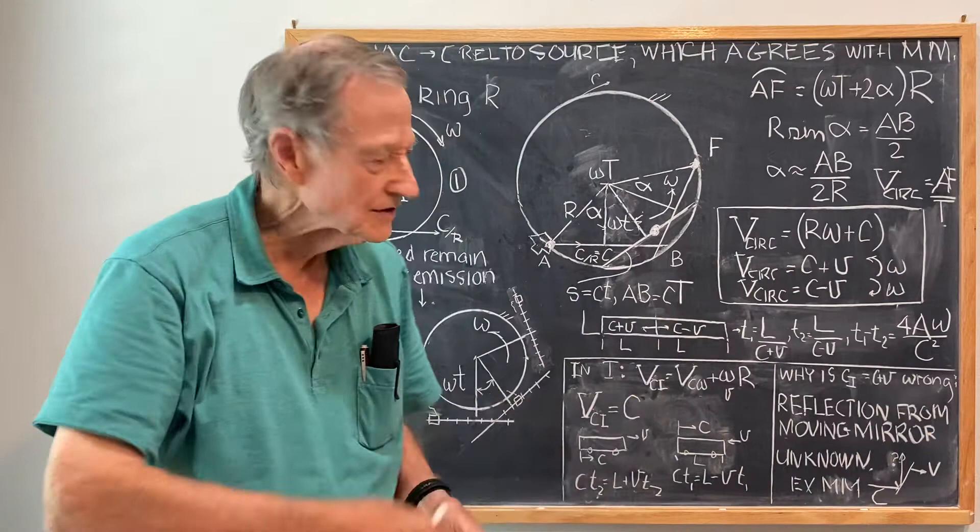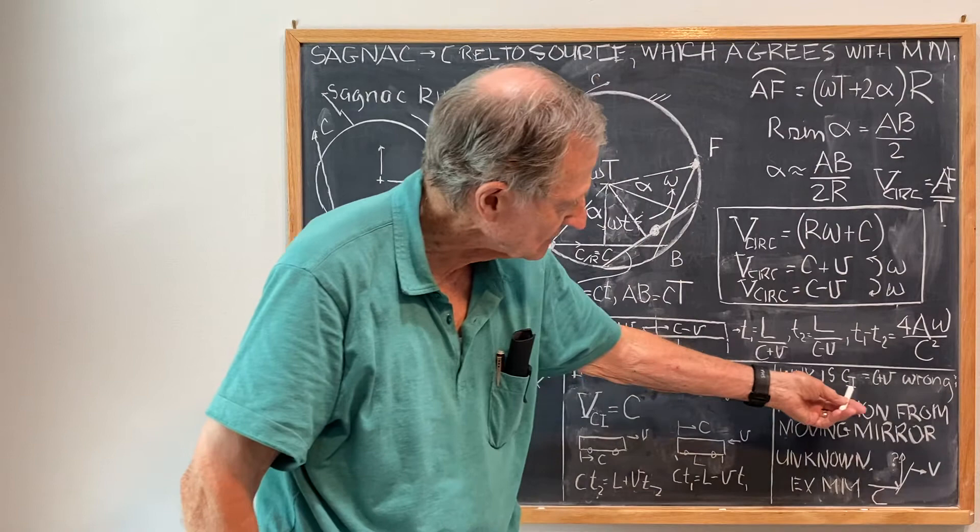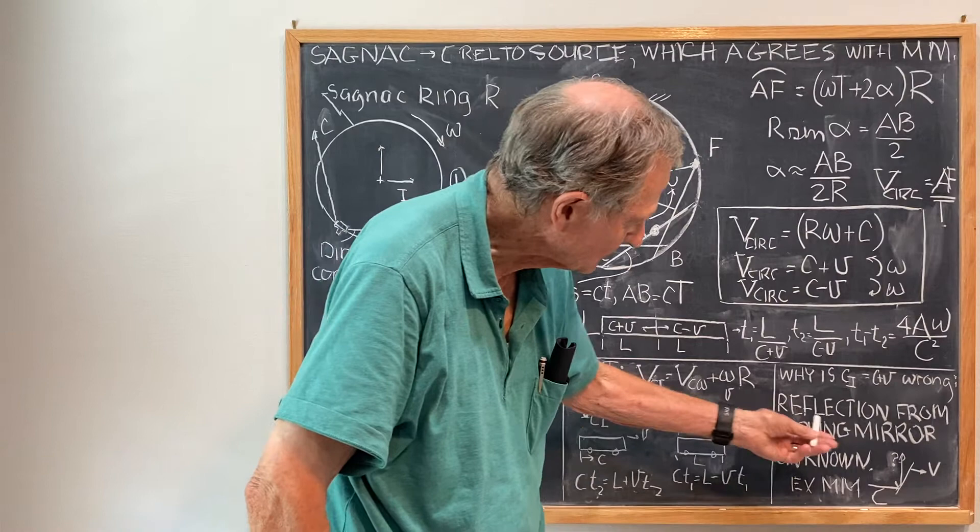So the problem stems from the reflection from a moving mirror. What's wrong with CI equals C plus V? And it's that the problem is with the reflection from a moving mirror.